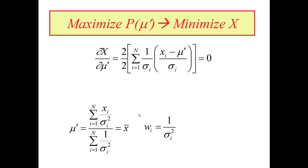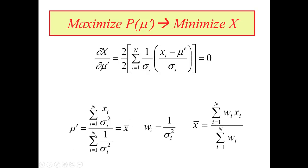To simplify notation, since 1 over sigma squared appears in both sums, we define it as a weight w sub i equals 1 over sigma i squared. The smaller sigma i is, the larger the weighting assigned to that measurement. The weighted mean then becomes the sum of w sub i times x sub i divided by the sum of all the weights.